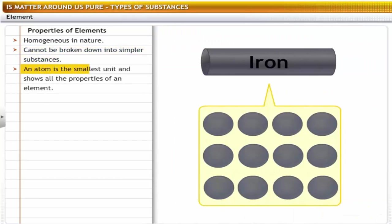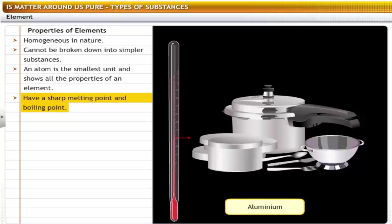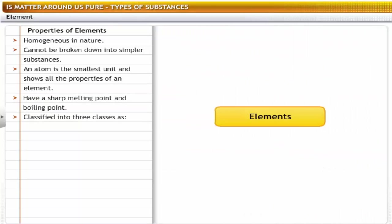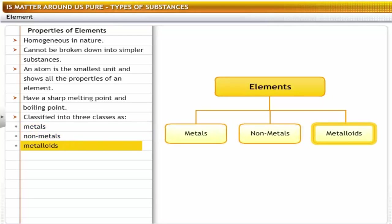An atom is the smallest unit that shows all the properties of an element. For example, an atom of iron shows all the properties of that metal. Elements have sharp melting and boiling points — for example, aluminum has a boiling point of 2447 degrees centigrade. Elements can be classified into three classes: metals, non-metals, and metalloids.